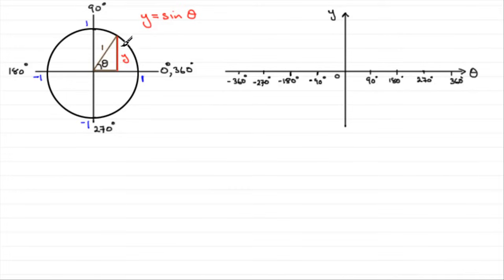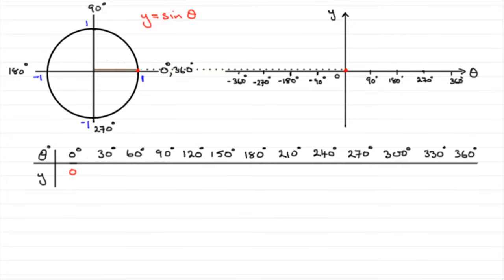Now we'll take away this triangle and look at how this displacement changes as we revolve the radius in an anticlockwise direction around the circle. When we start from 0, along the horizontal, you can see that for 0 degrees the displacement y is 0. On the axis, at 0, y is 0.